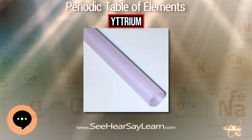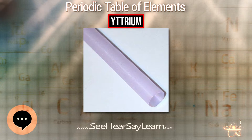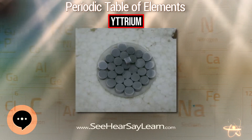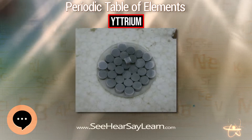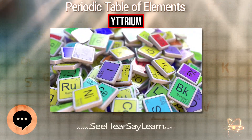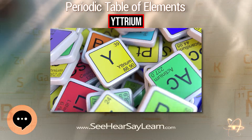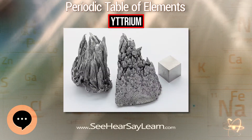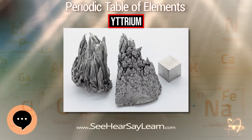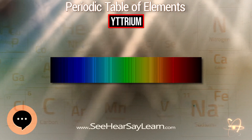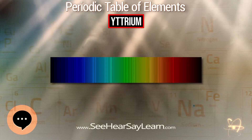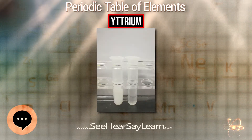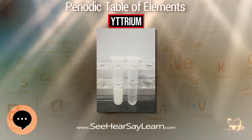Yttrium compounds are used as a catalyst for ethylene polymerization. As a metal, yttrium is used on the electrodes of some high-performance spark plugs and in gas mantles for propane lanterns as a replacement for radioactive thorium. Currently under development is yttrium-stabilized zirconia as a solid electrolyte and as an oxygen sensor in automobile exhaust systems.